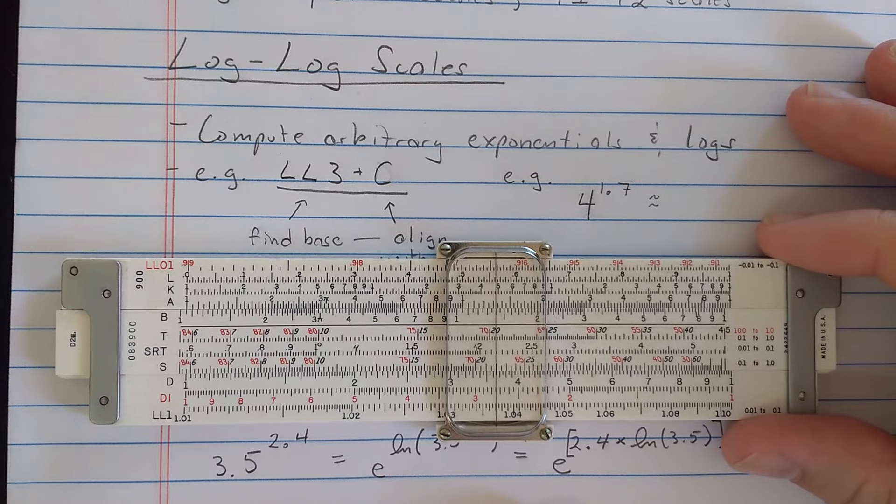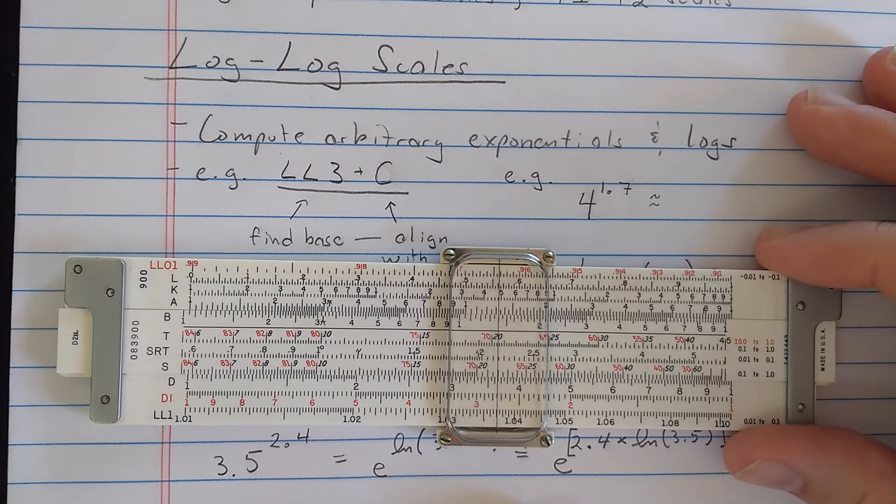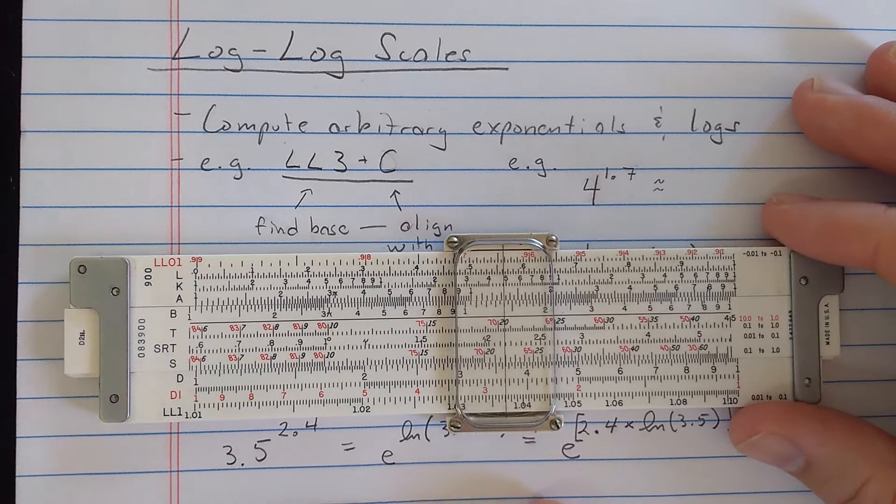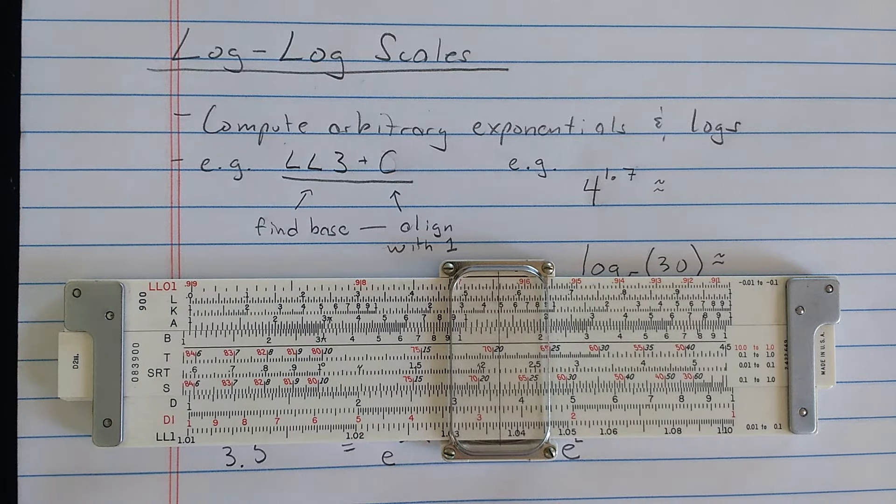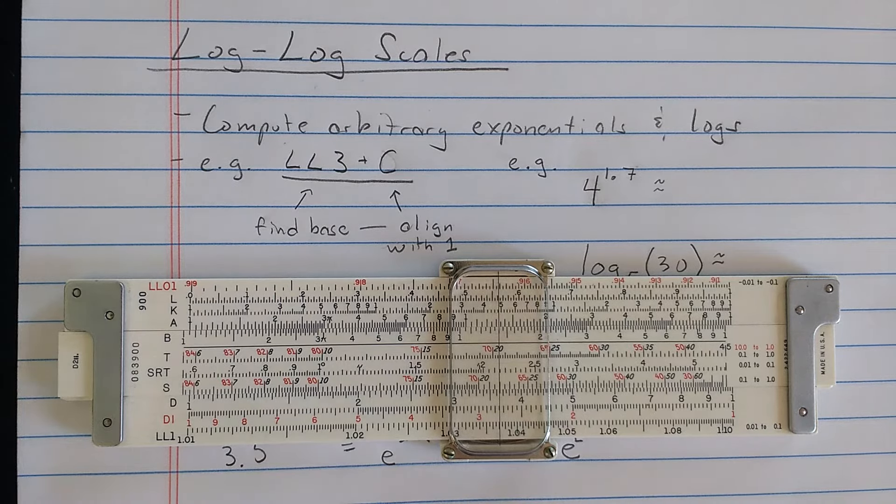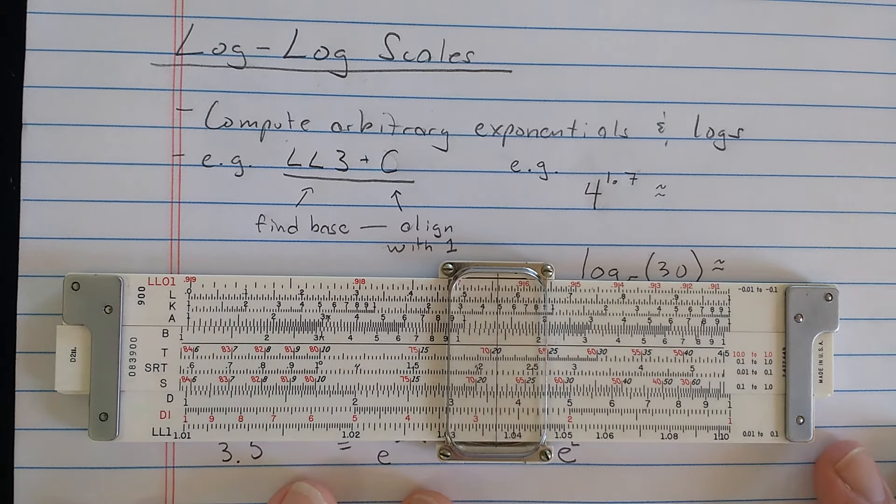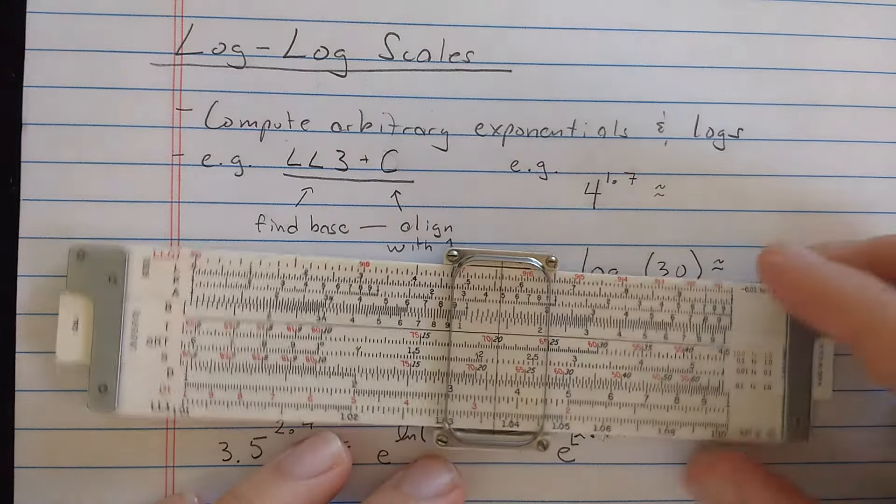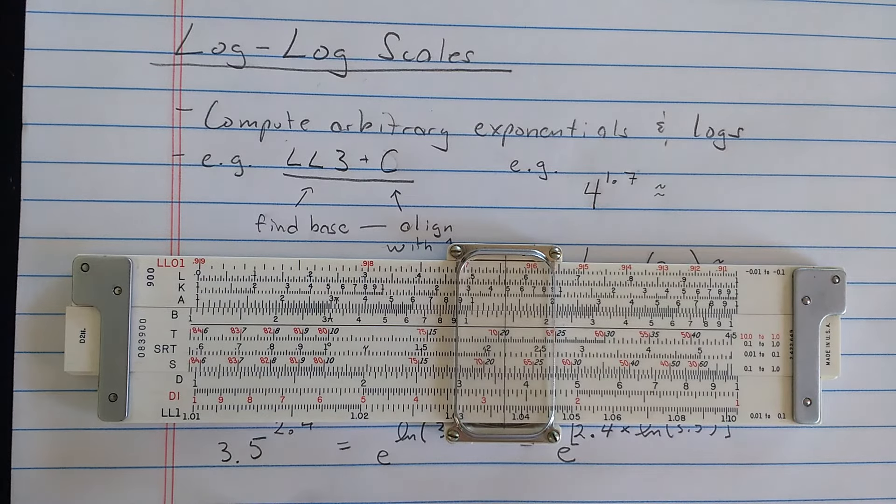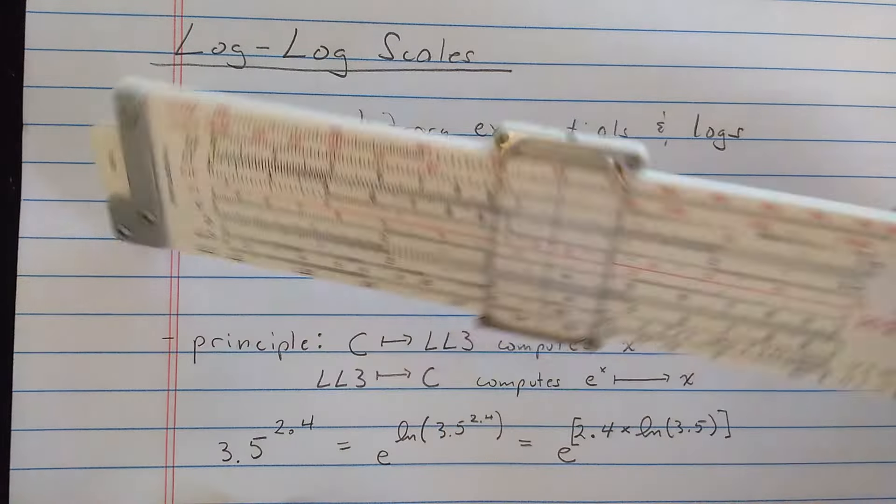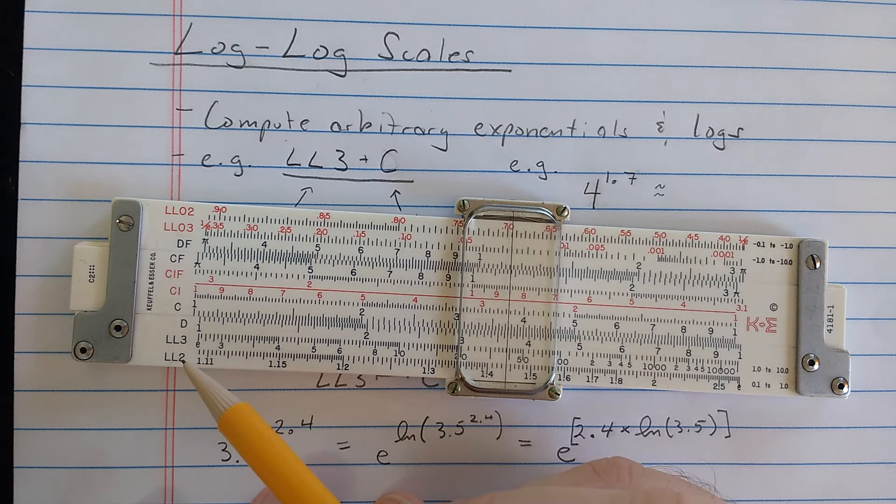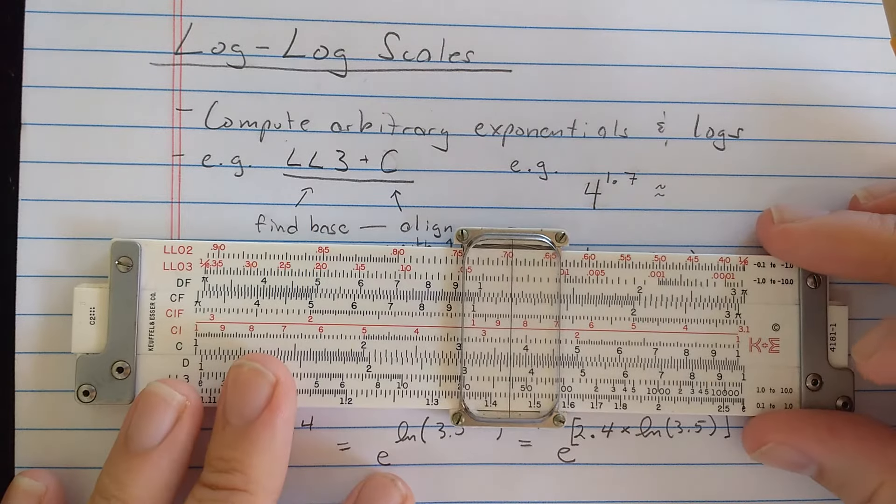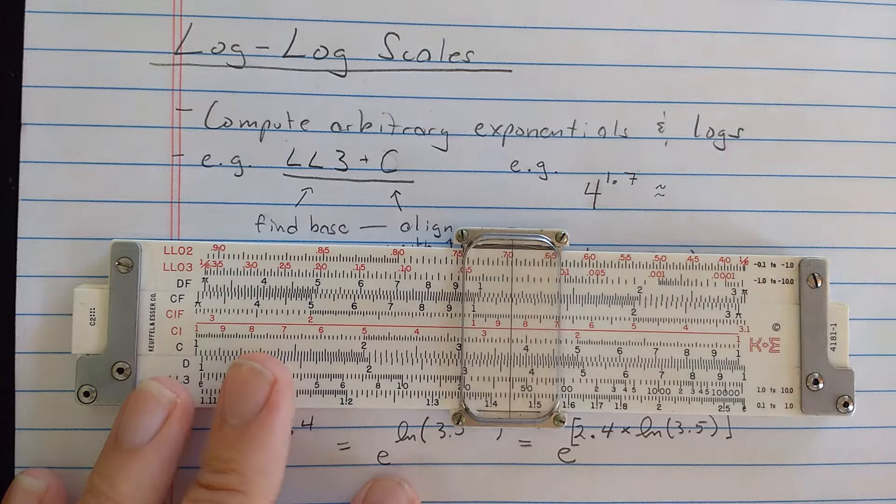The other nice thing you have on most more advanced slide rules are something called log-log scales. These allow you to compute arbitrary exponentials and logs, and these could be the subject of a series of videos in themselves, so I'm just going to show you a couple basic things. We're going to look at, back on the other side, the log-log-3 scale, which is labeled LL3. Here's how we could compute 4 to the 1.7.